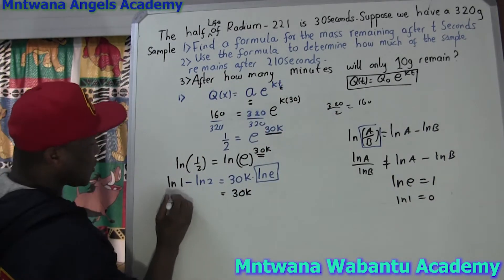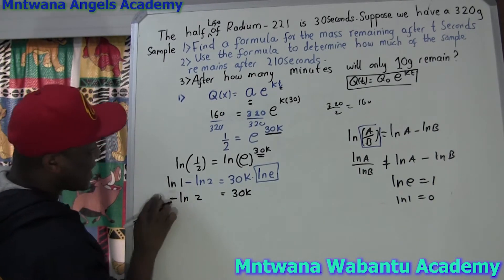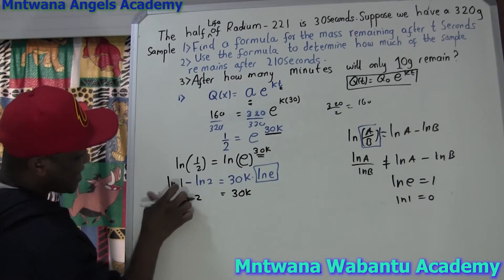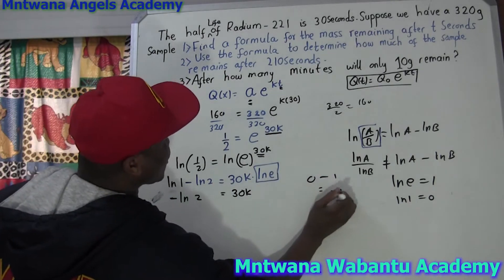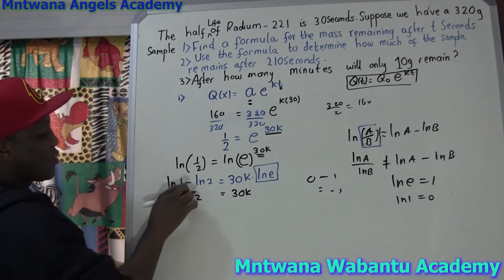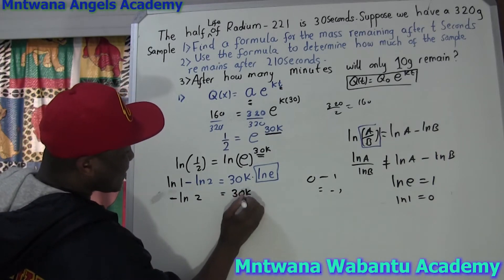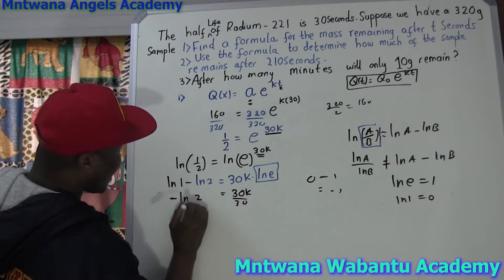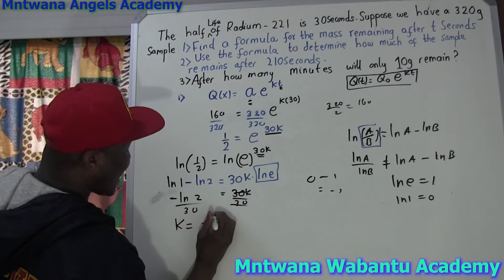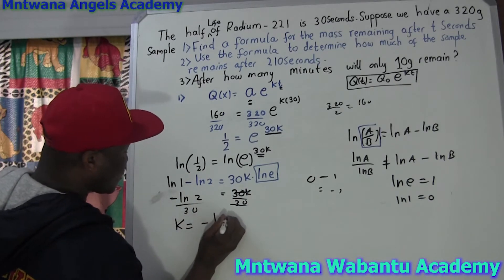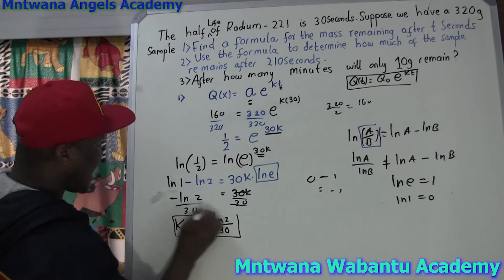So this will be 0 minus ln of 2, equal to 30K times 1, which is 30K. So it gives us negative ln of 2 equal to 30K. Divided by 30 on both sides, this and this cancel. So our K equals negative ln of 2 over 30. This is our K.